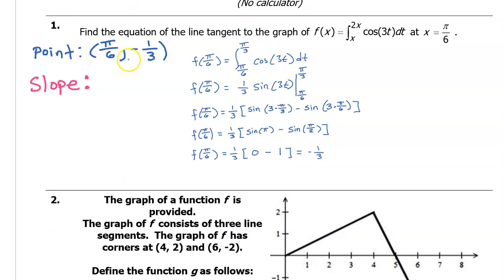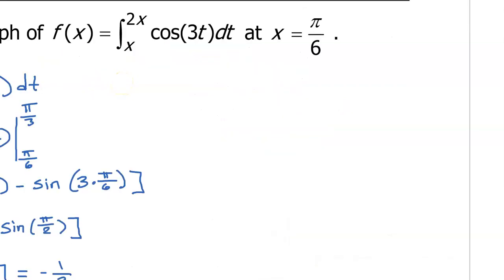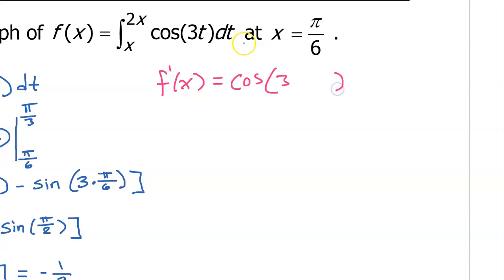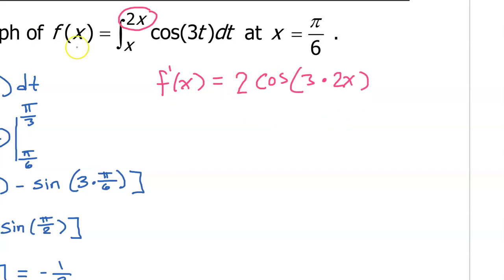So this is the y value of the point — we have a point on the tangent line. In order to write the equation of the tangent line, we also need the slope. The slope of the tangent line will be given by the derivative, and this is where the second fundamental theorem of calculus comes in. To take the derivative of an integral defined function, we will take the inner function, cosine of 3t, and plug in the upper limit of integration, putting 2x in there. Then we must multiply by the derivative of the upper limit, which is 2. I'd rather put this 2 in the front.